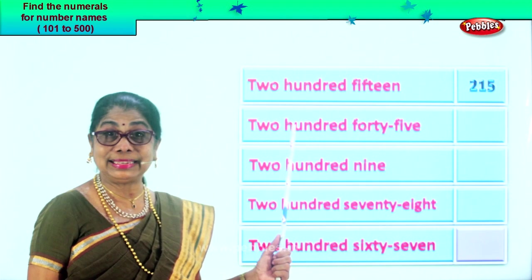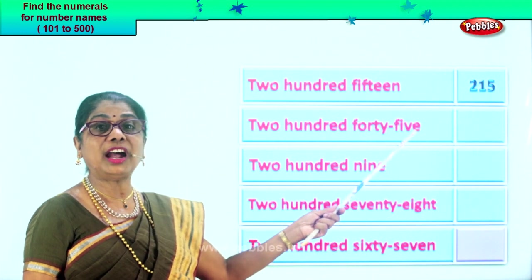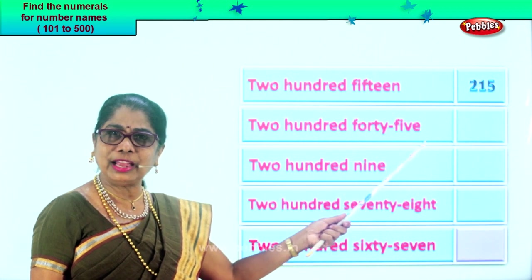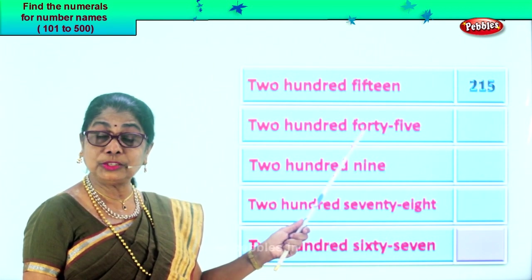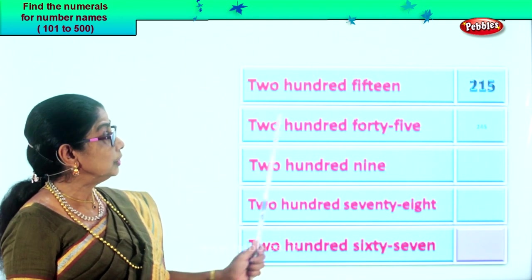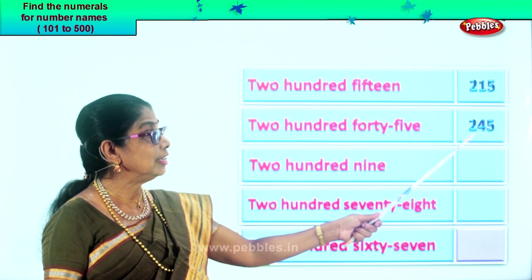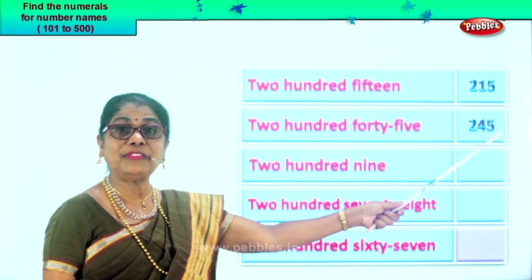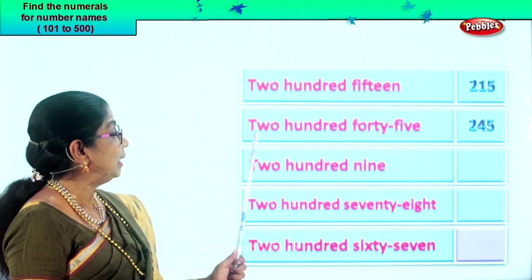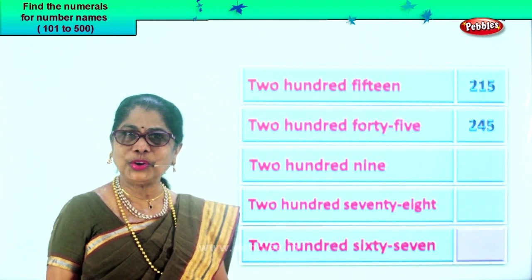Let's take the next number name. Two hundred forty-five. Two in the hundredth place. Forty-five — four in the tens place, five in the ones place. So you put two, four, five. Two, four and five. Read this: two hundred forty-five. Isn't it easy? Are you enjoying it?